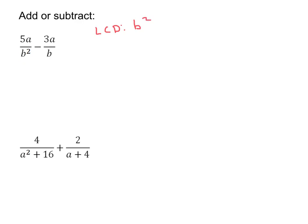After we find our LCD, we're going to want to take a look at these two fractions and try to get them to have a common denominator. We see that this one already has the denominator b squared, so we're just going to go ahead and rewrite this: 5a over b squared minus...